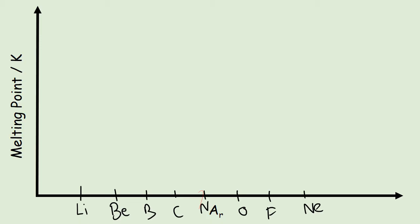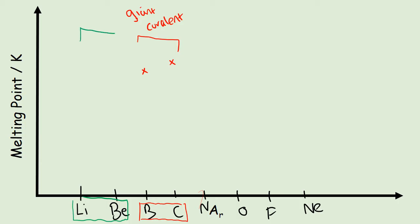Now let's look at the trend in melting points across period two: lithium, beryllium, boron, carbon, nitrogen, oxygen, fluorine, neon. To do that we need to know their structures. Boron and carbon are both giant covalent, which means they have very, very strong bonds holding their structure together — in fact they'll have the highest two melting points of all these elements. Lithium and beryllium are metallic structures, so they will also have high melting points, however not as high as the giant covalent.